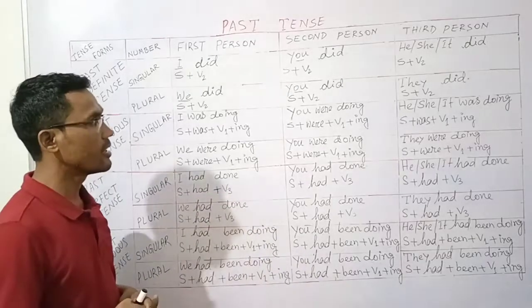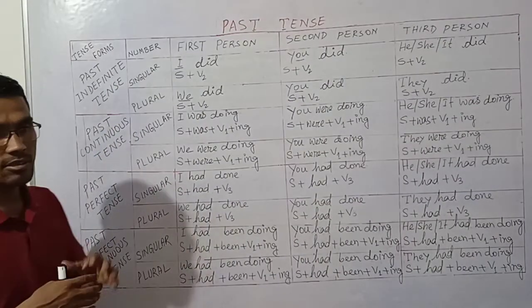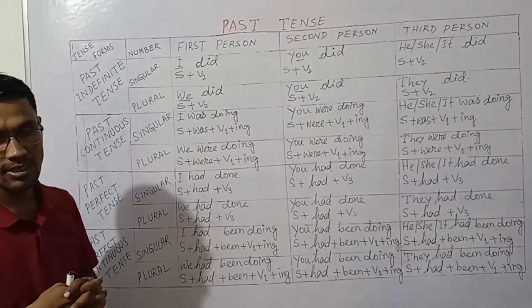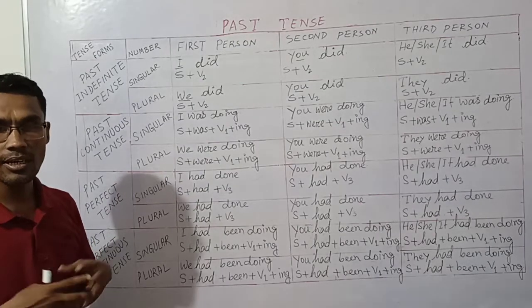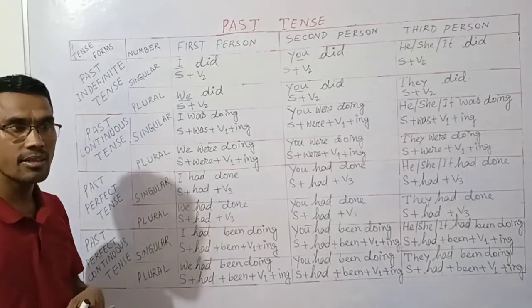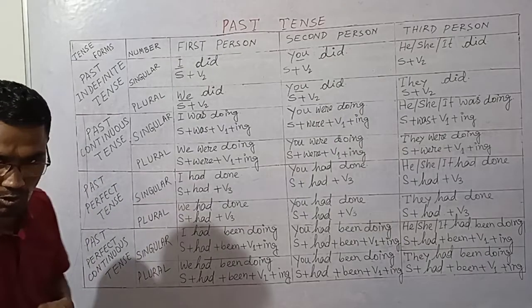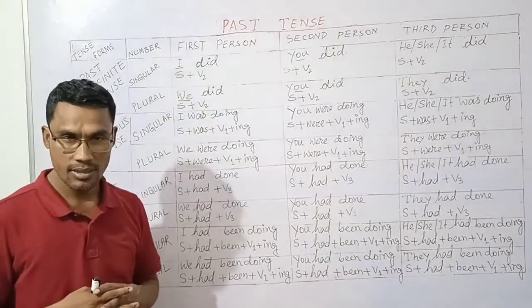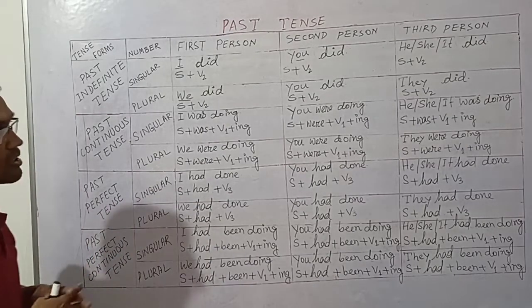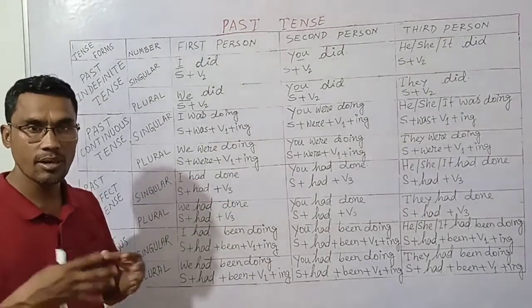Now for past continuous tense, the auxiliary verbs are 'was,' 'were,' and 'where.' For first person singular 'I' and third person singular 'he/she/it,' we use 'was.' For example: 'I was,' 'he was,' 'she was.' For 'we,' 'you,' 'they,' and plural subjects like 'the students were,' 'the workers were,' 'the people were' — we use 'were.' Third person singular: 'the boy was,' 'the baby was.'